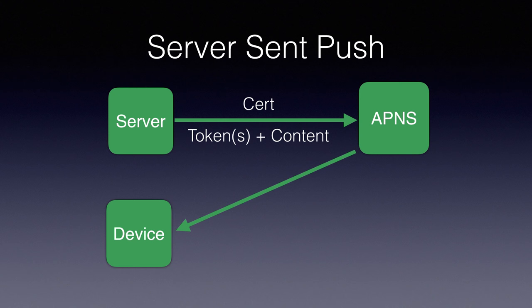Here's a rough diagram showing how pushes get delivered. Your push server talks to Apple's push notification servers with the certificate, saying 'I'm talking on behalf of this person.' Apple responds, you send the tokens and content, Apple says 'cool, we'll sort that out,' and then the push appears on the devices. Apple keeps a persistent socket connection with your device after it's powered on, and we'll get to that later.